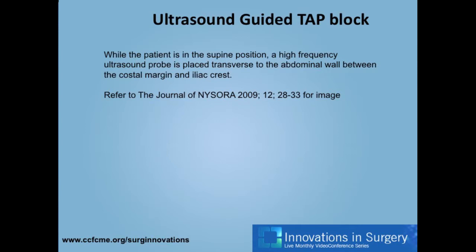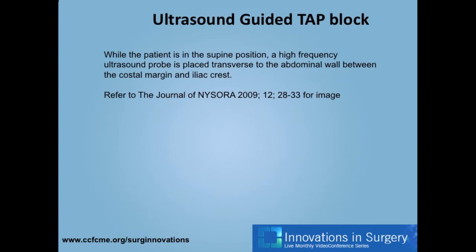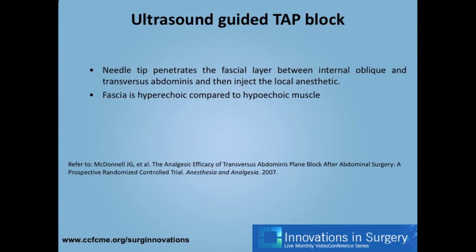The landmark for ultrasound-guided TAP block is similar to the landmark technique, but in this case a high-frequency ultrasound probe is placed between the iliac crest and the costal margin to visualize the layers of muscle. The needle is then advanced to penetrate at the fascia level between the internal oblique and transverse abdominis. The local anesthetic is then injected at the transverse abdominal plane.